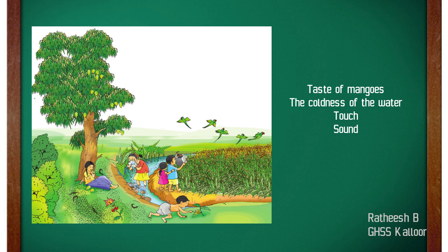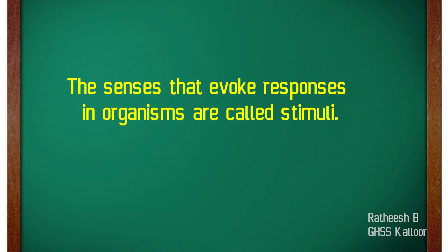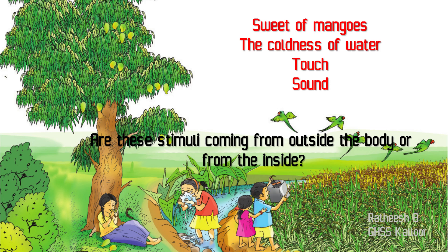Now we can conclude. The factors to which the children and other organisms respond are the taste of mango, the coldness of water, touch, sound, etc. The factors that evoke responses in organisms are called stimuli. The children and other organisms respond due to certain factors, and these factors are called stimuli. In the introductory picture, we can see different types of stimuli which create responses in organisms.